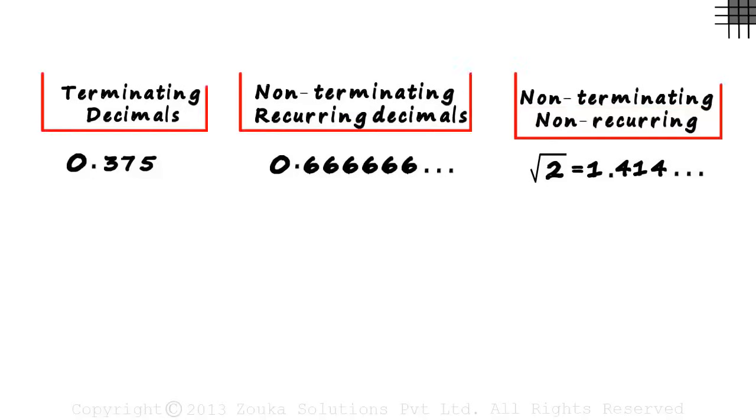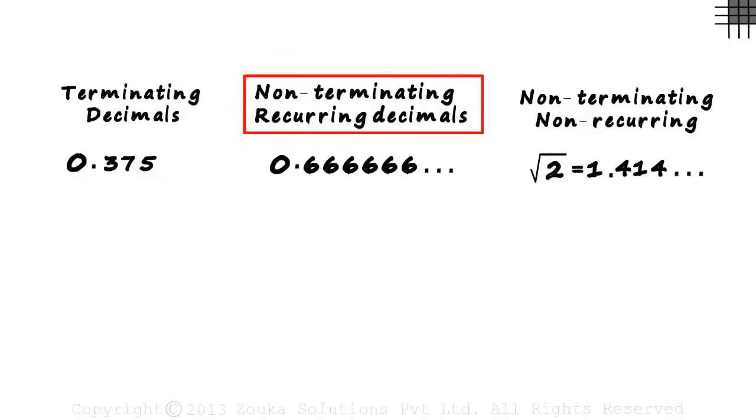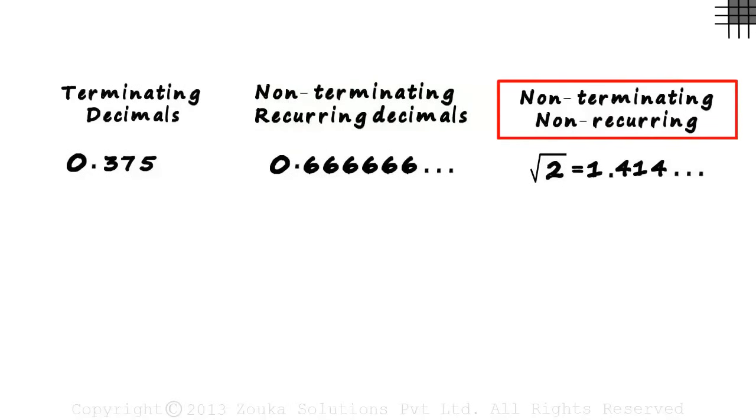Broadly, these are the three types of numbers we see in mathematics. Terminating, non-terminating recurring, and non-terminating non-recurring.